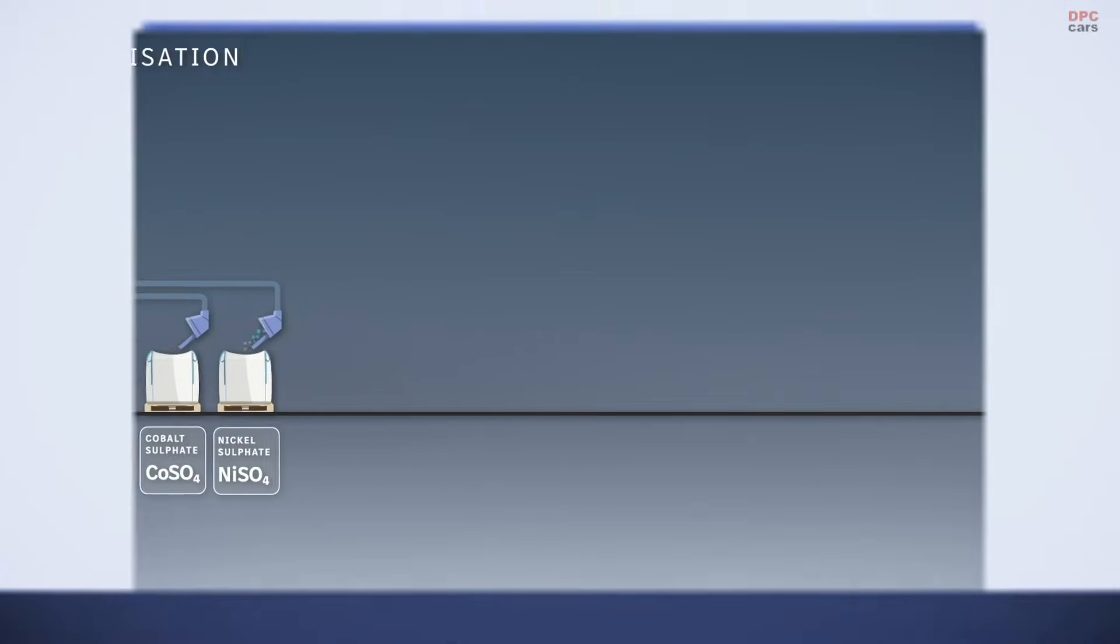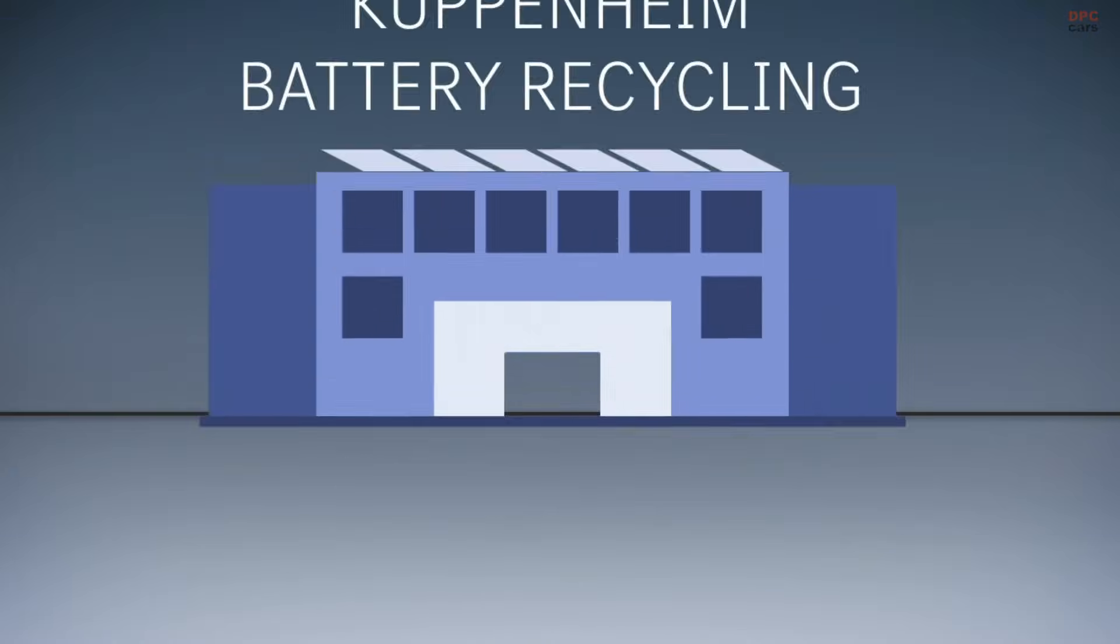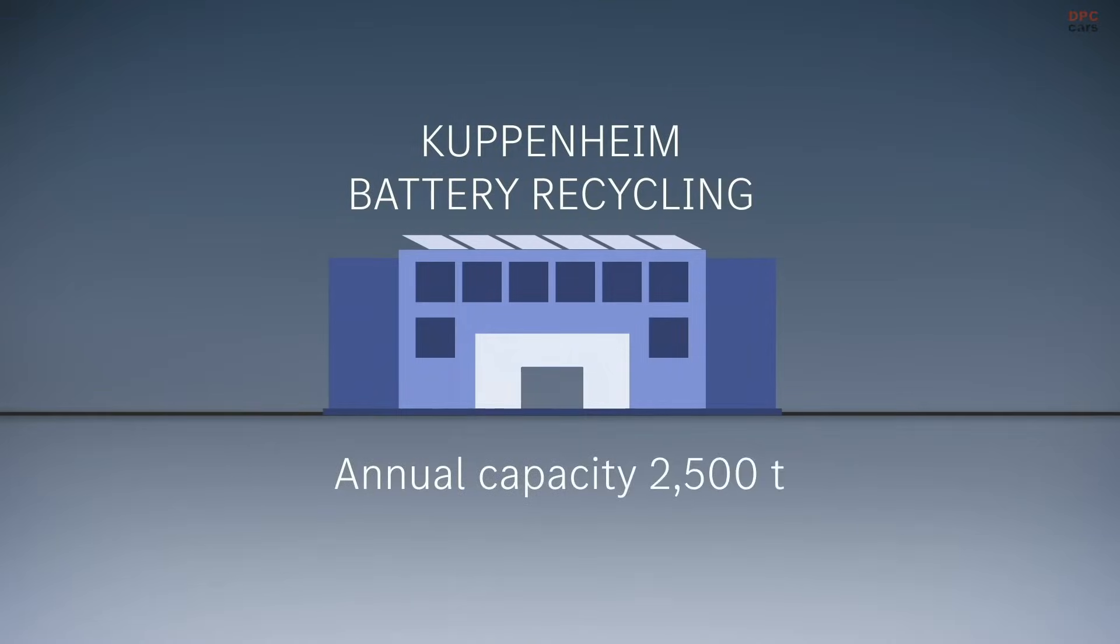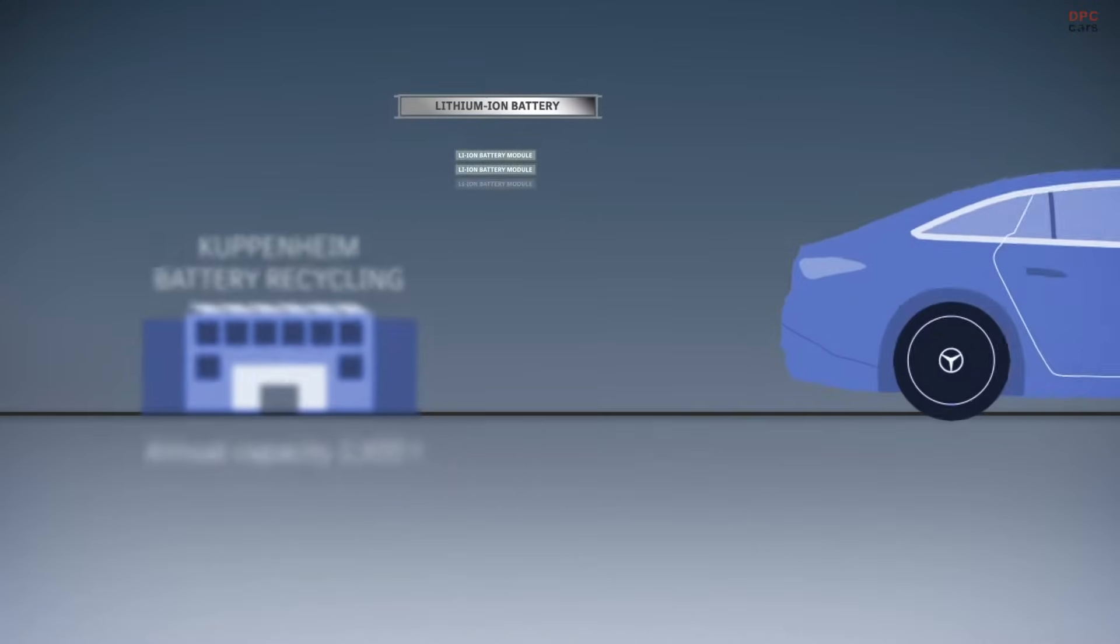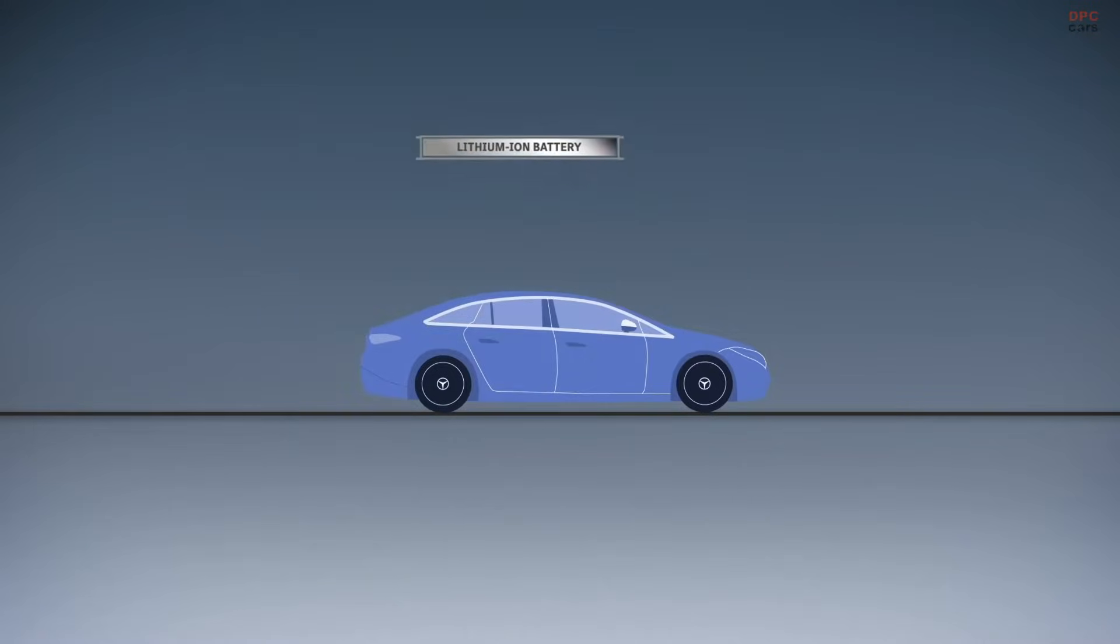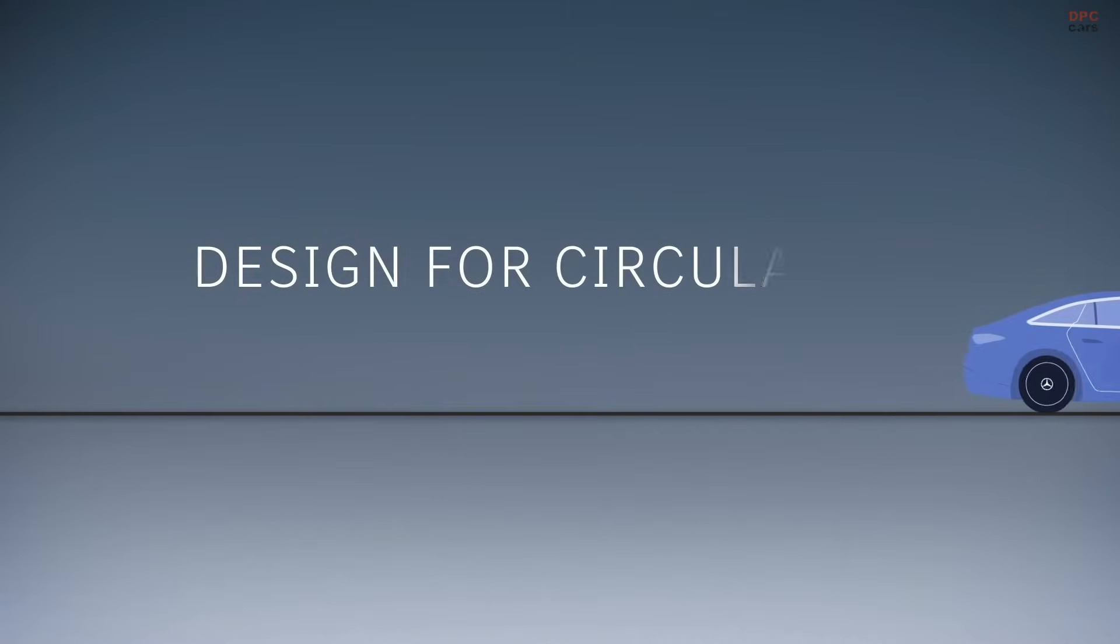The battery recycling plant has an annual capacity of 2,500 tons. The recovered materials are fed back into the material cycle and are used in the production of more than 50,000 battery modules for new all-electric Mercedes-Benz models. This closes the raw material loop.